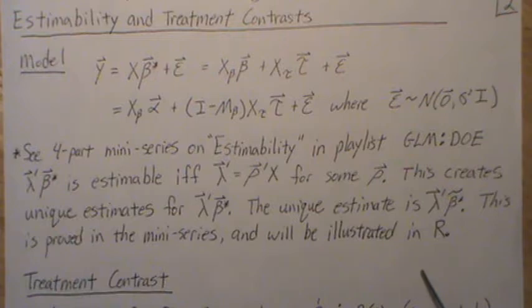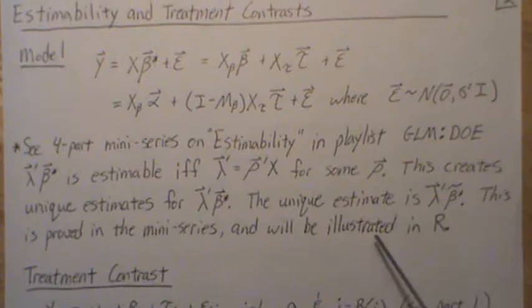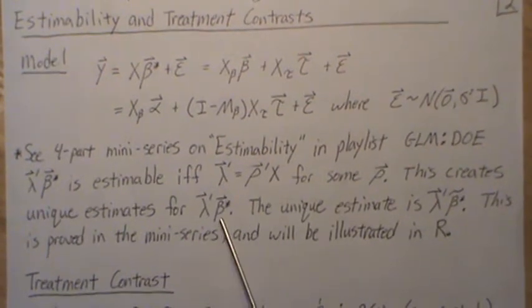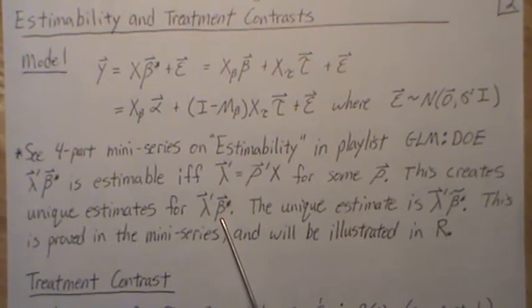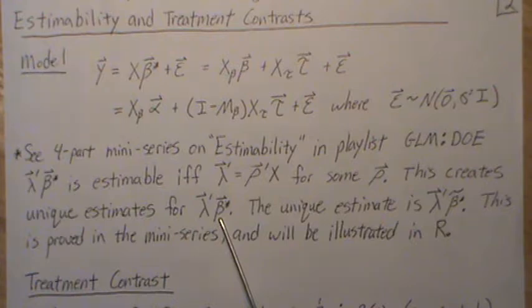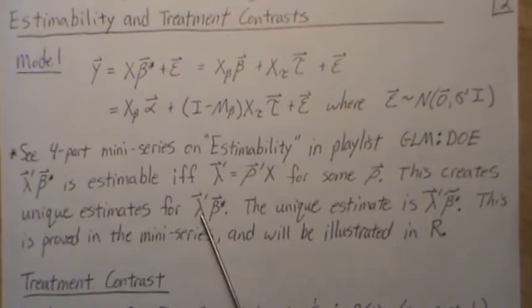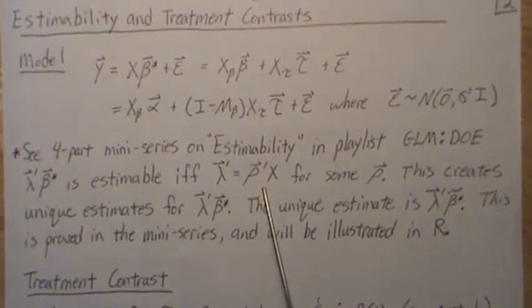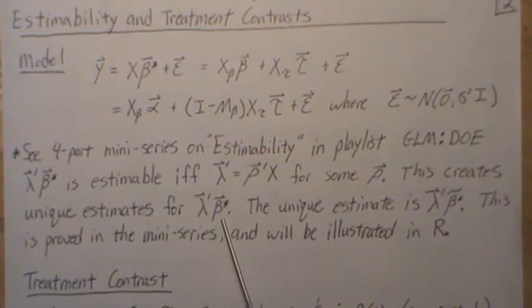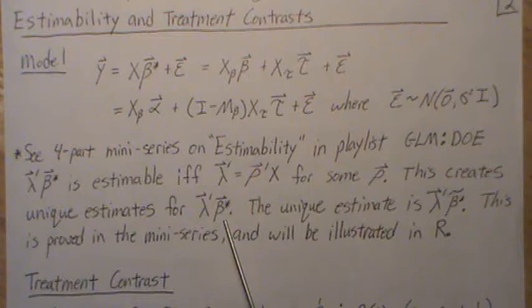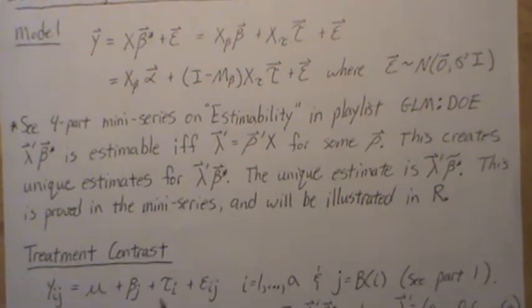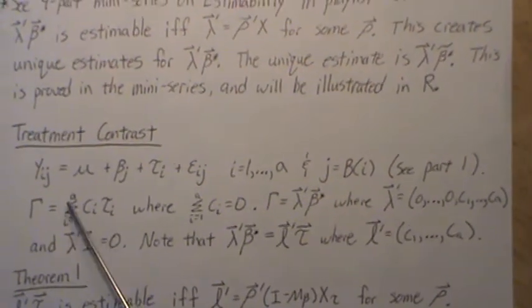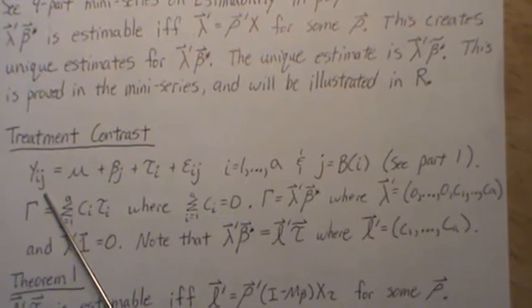The R program we'll go over in two videos — it'll be part eight of eight — illustrates a few different least squares estimates for the beta parameters. They're all equally valid least squares estimates, but when we take linear combinations where lambda is part of the row space, we get unique estimates from all of them. I just find that so fascinating.